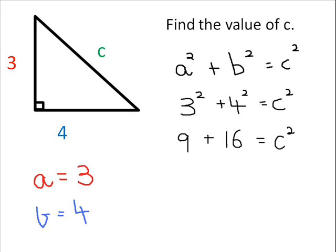So 3 squared equals 9, 4 squared equals 16, and we still have C squared on the other side. So we add the 9 and the 16, which equals 25, and that still gives us C squared.